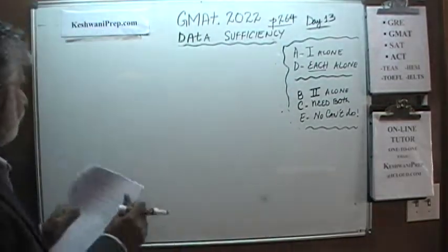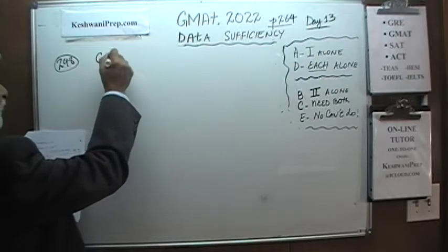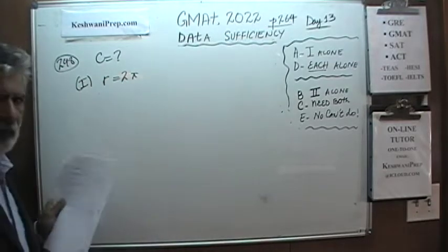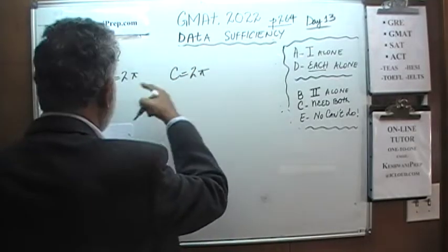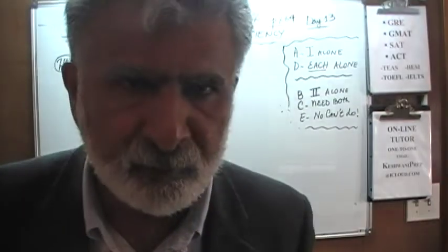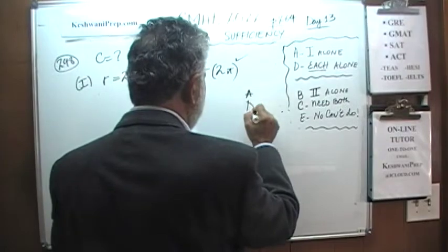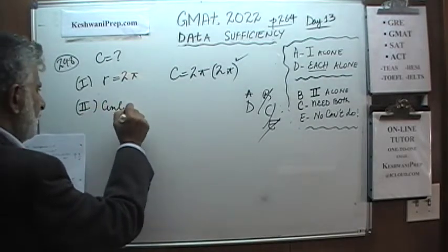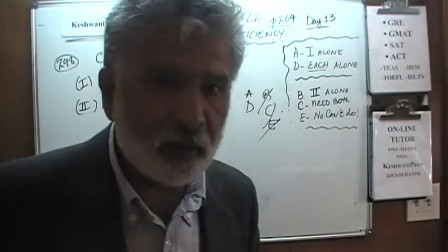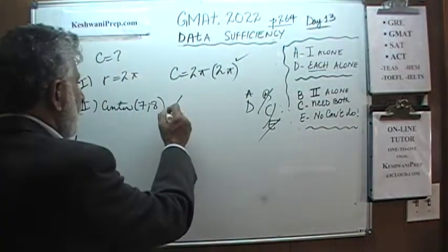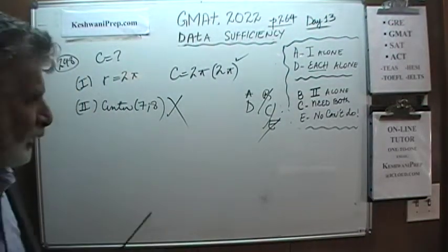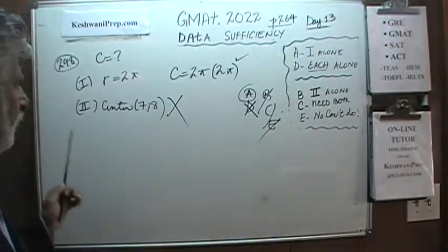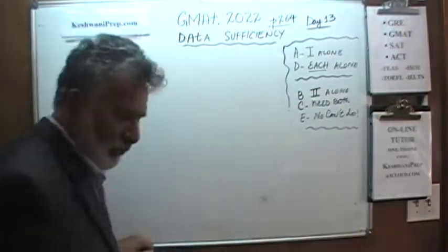Number 298 is a very simple question: how much is the circumference of a circle? The first statement tells us the radius is 2π. If we know the radius, we can figure out the circumference — it is simply 2πr, and r is 2π, so the circumference is 4π². The first statement works perfectly. The second statement tells us the center of the circle is at coordinates (7, 8). Simply knowing the coordinates of the center does not enable us to figure out the circumference. The second statement by itself is not enough. The answer is A — only the first statement alone is sufficient.